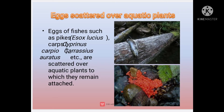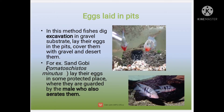Next is eggs scattered over aquatic plants — in this method the fishes scatter their eggs over aquatic plants to which they remain attached; this is shown by carp. The next one is eggs laid in a pit — in this method the fishes dig an excavation in the gravel, lay their eggs in the pit, cover them with gravel, and then desert them. This behavior is shown by sand gobies.